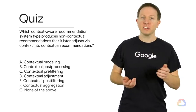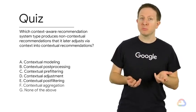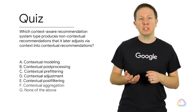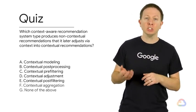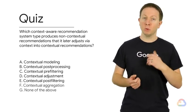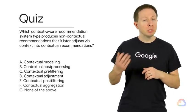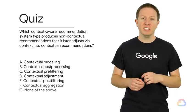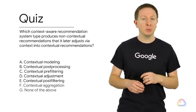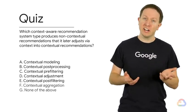Now that we've learned about the three main types of context-aware recommendation system algorithms, let's test your knowledge. Which context-aware recommendation system type produces non-contextual recommendations that it later adjusts via context into contextual recommendations? Contextual modeling, contextual post-processing, contextual pre-filtering, contextual adjustment, contextual post-filtering, contextual aggregation, or none of the above.